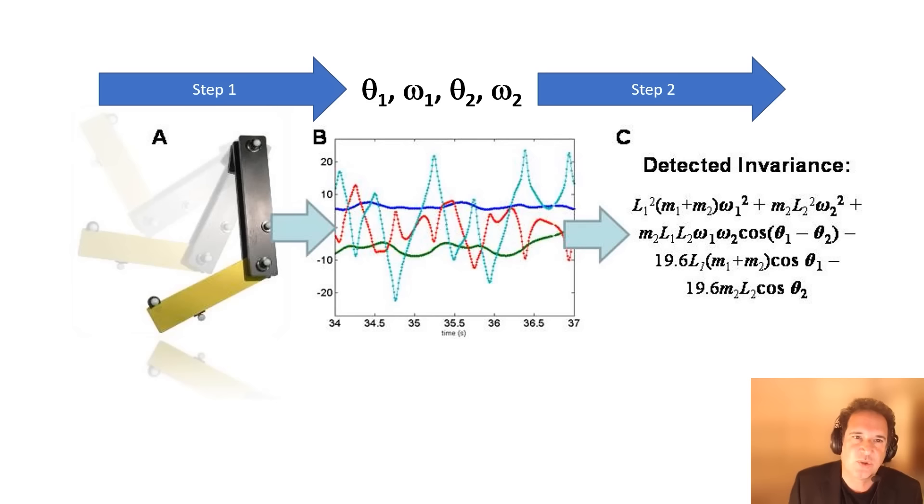But all of these tools go from variables to the equation. They do step two, going from the angular velocity of a swinging pendulum or any dynamical system to the equations. But the first step of observing a dynamical system and extracting what the relevant variables are has somehow resisted automation.